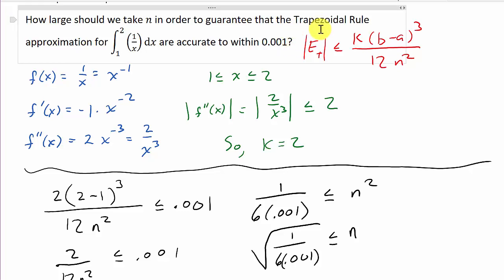So, if you use n equals 13, then our solution will be within 0.001 of the actual answer. All right. So, I hope the video helped. Check out the other videos. Give me a like, share, and subscribe, and thanks for watching.